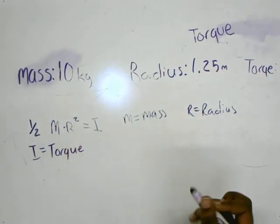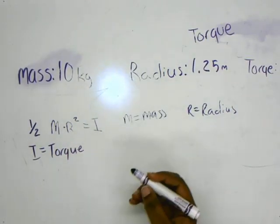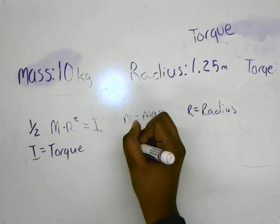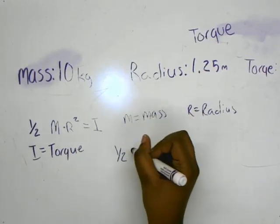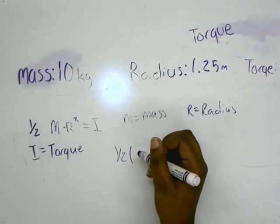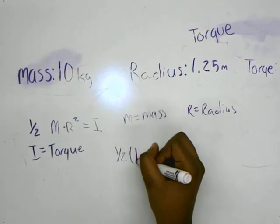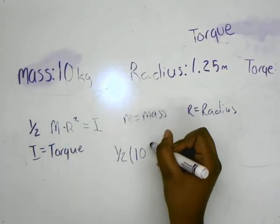So now we plug it in, and it should be one half, I put it in parentheses, and you can do 10, and then 1.25 squared equals.